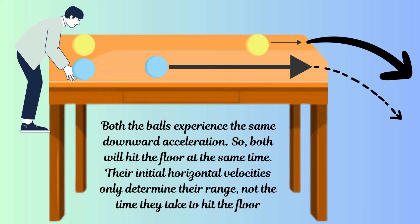In the second scenario, the two balls rolled on the table have different horizontal speeds, but their vertical motion is affected equally by earth's gravitational pull. So both balls will hit the floor at the same time, irrespective of their initial horizontal velocity.